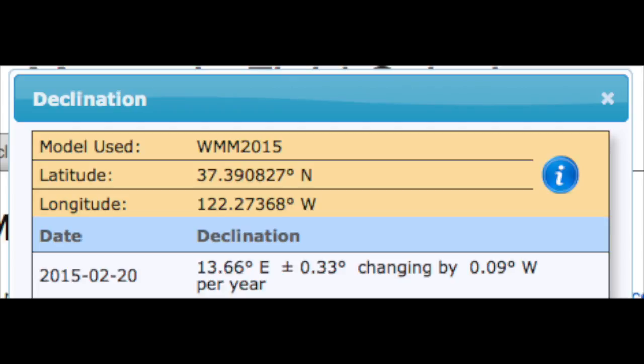Round the declination up to 14 degrees and think of the change as about a degree every 10 years.